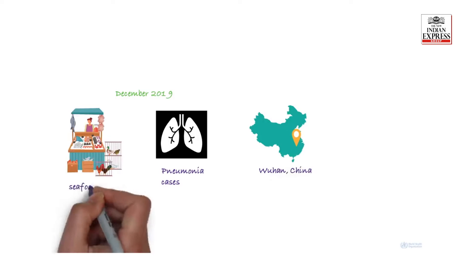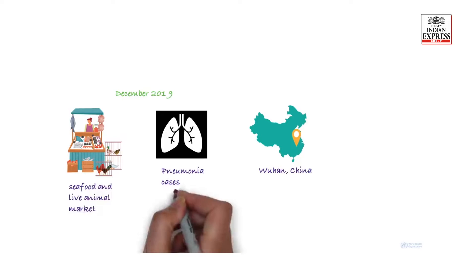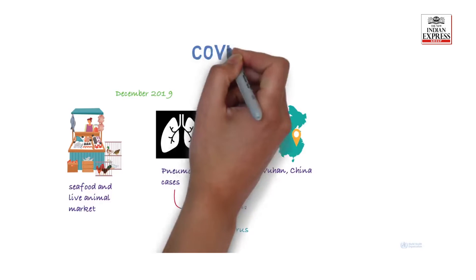In December 2019, there was a cluster of pneumonia cases in the city of Wuhan in China. Some of the early cases had reported visiting or working in a seafood and live animal market in Wuhan. Investigations found that the disease was caused by a newly discovered coronavirus. The disease was subsequently named COVID-19.